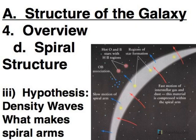Now why is gas and dust concentrated in the spiral arms? Why does star formation take place there? Well, the idea comes from what's called a density wave.